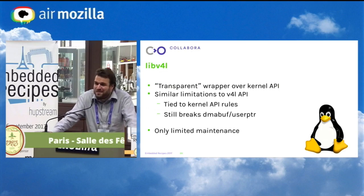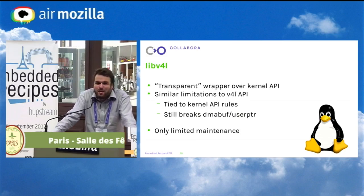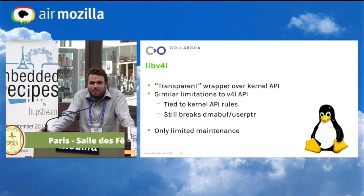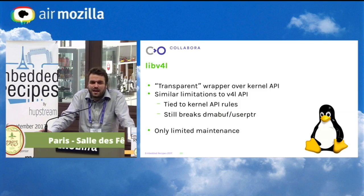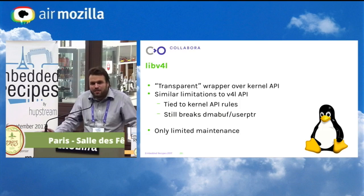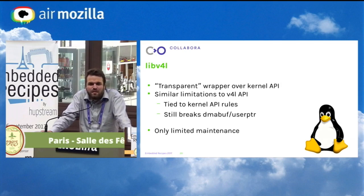From our kernel friends, there's libv4l. It tried to be a transparent wrapper over the kernel API, meaning it's stuck with a kernel-like API which is really terrible for a user space library. Last time I checked, if you tried to use DMA buffer user pointer it was still broken — you had to disable libv4l. And honestly, the maintenance is not really great; no one is taking care of it seriously. The API rules are tied to kernel APIs so it's very slow to add anything. In the user space world you can be much more aggressive on your APIs, make mistakes, and try again — but libv4l doesn't do that.